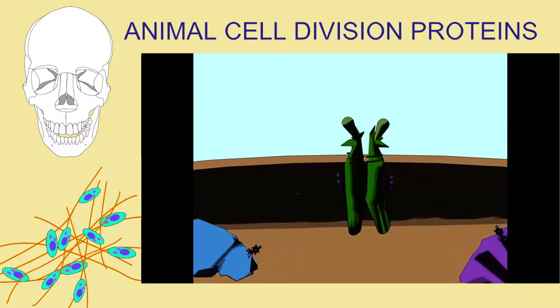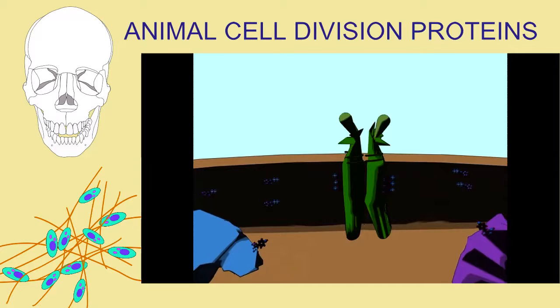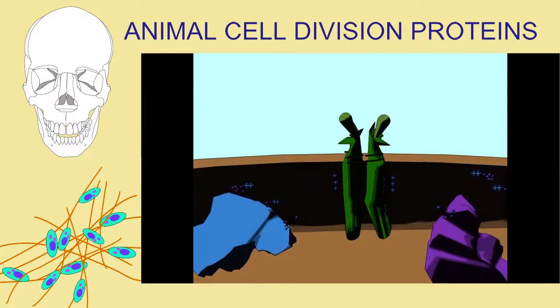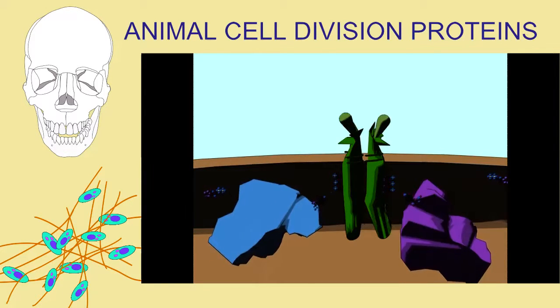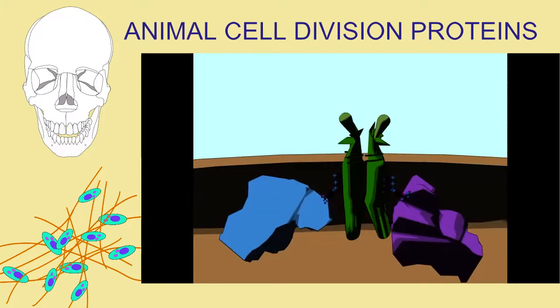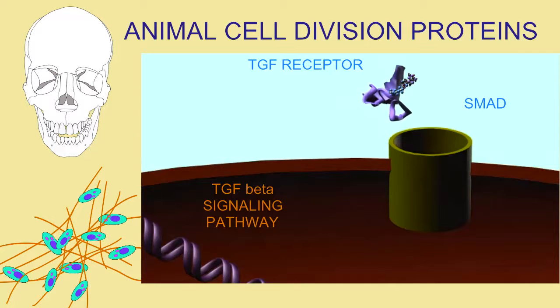Sponges also possess homologues of some of the important kinases which regulate the cell cycle in the higher animals, such as the stress-activated protein kinase and the transforming growth factor beta family.